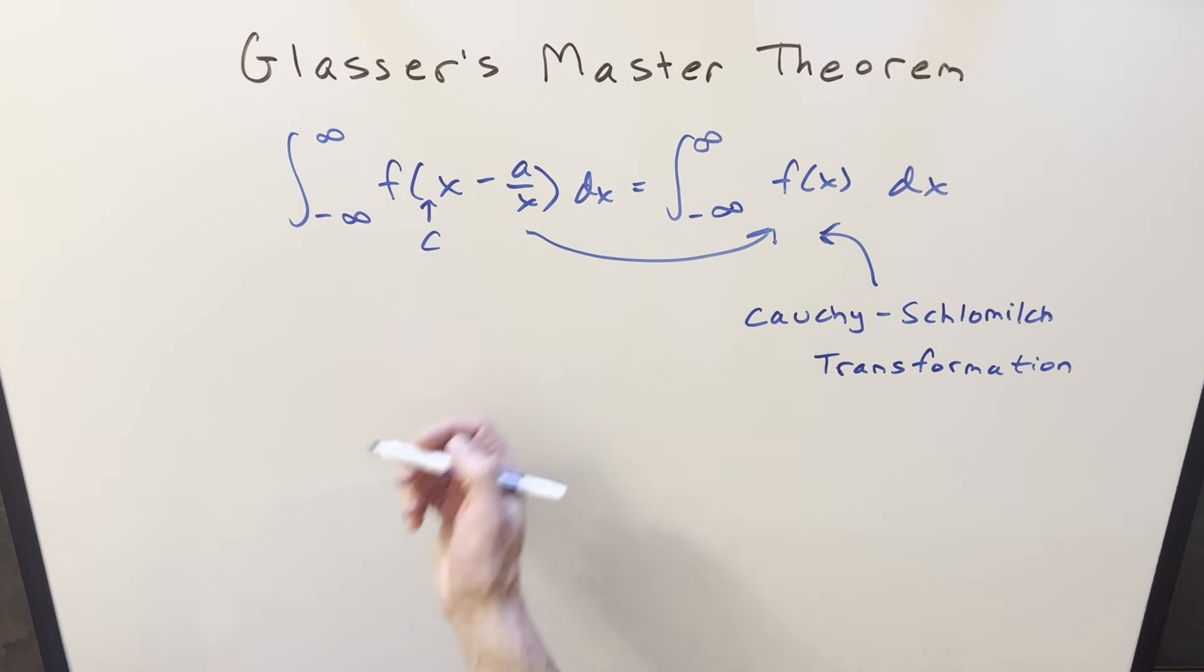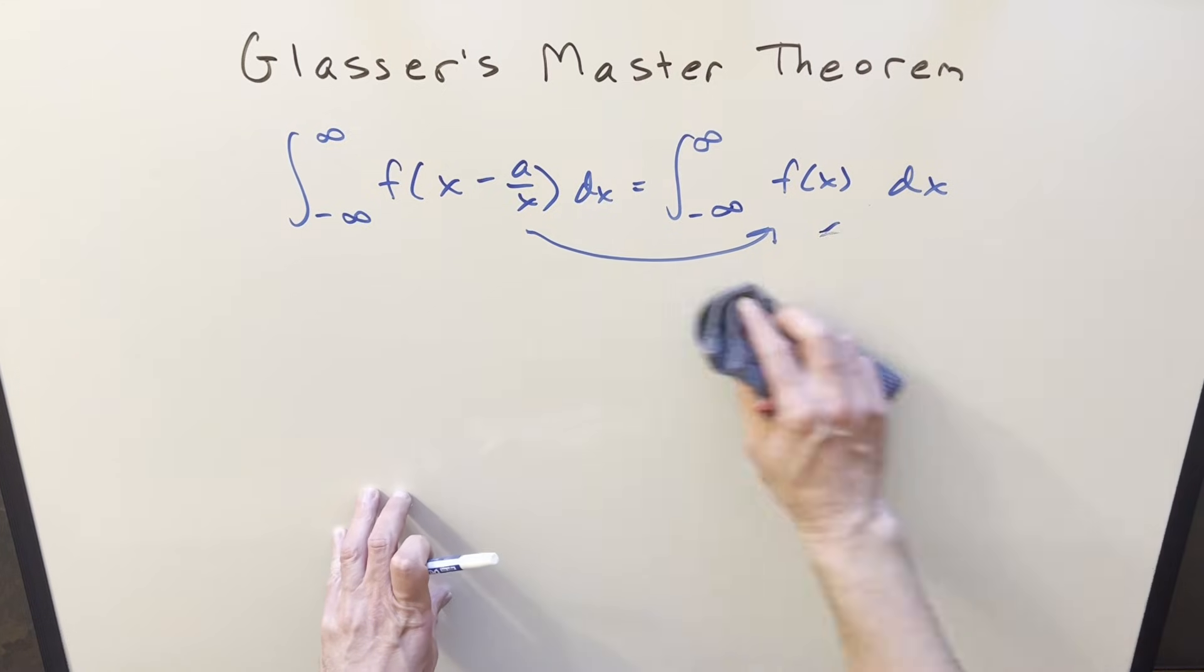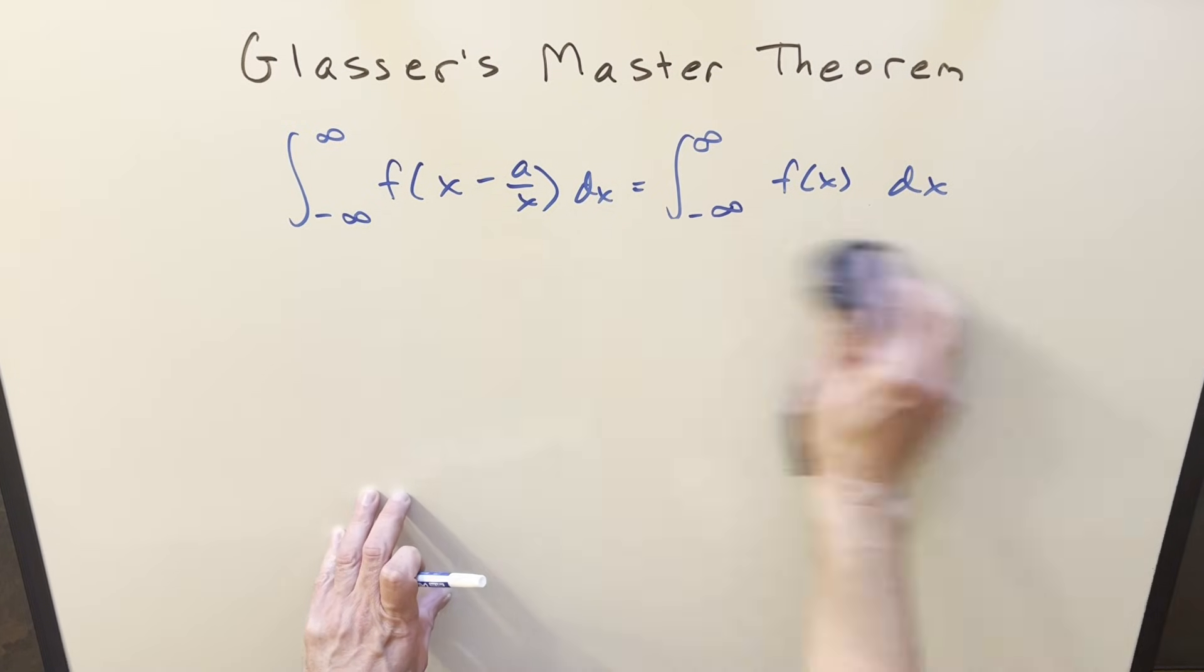And then if there was some constant on the x, that wouldn't bother us much either, because you could fix that with algebra or a u substitution. So I'm not going to worry too much about some of these differences. I just want to make it clear that this isn't exactly how it's stated.